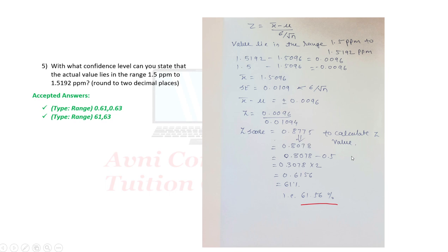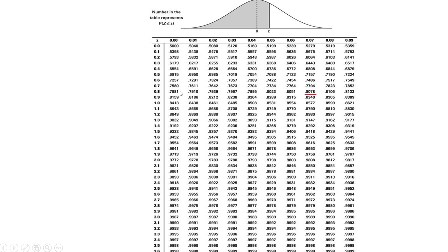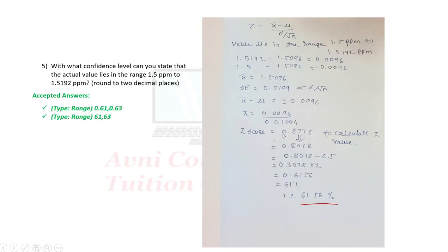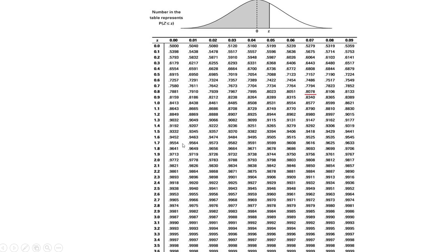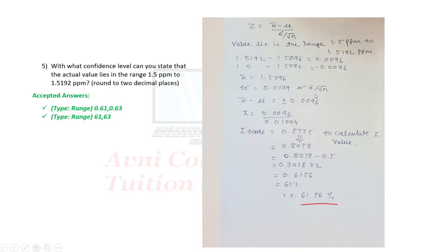To find the confidence level from the Z-table: for Z = 0.8775, look up 0.8 and 0.07, giving 0.8078. Then: (0.8078 minus 0.5) × 2 = 0.3078 × 2 = 0.6156. That means the confidence level is approximately 61.56%. The range is as shown.